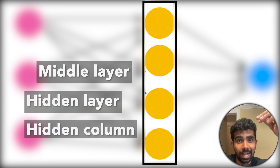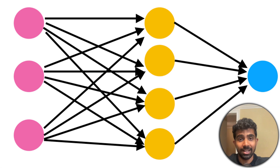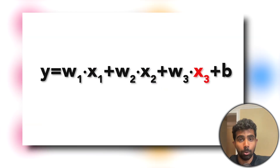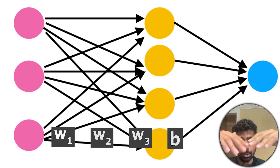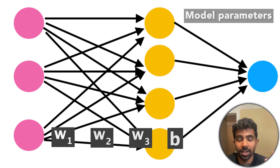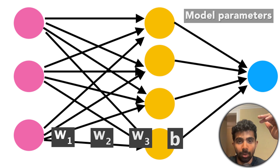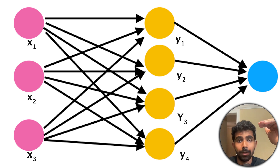The middle layer — also called the hidden layer — is where the magic happens. That's where the bulk of the multiplications and additions occur. Each node in the hidden layer uses an equation with inputs x1, x2, x3, and for each hidden node we have parameters w1, w2, w3, and b. These are the model parameters, and the whole training process is just finding the best values for all the w's and b's so we get accurate outputs.